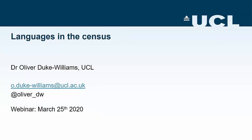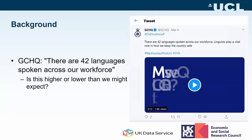Now I'm going to talk about questions about language that are in the census, and after that we'll have a presentation from Jemima about the census longitudinal studies. By way of background, there was a tweet from GCHQ saying that there were 42 languages spoken across their workforce. That's a good place to start because it prompts the question of whether this is higher or lower than we might expect in a large employer, and what do they mean by 'languages spoken' — is that capability or first languages?